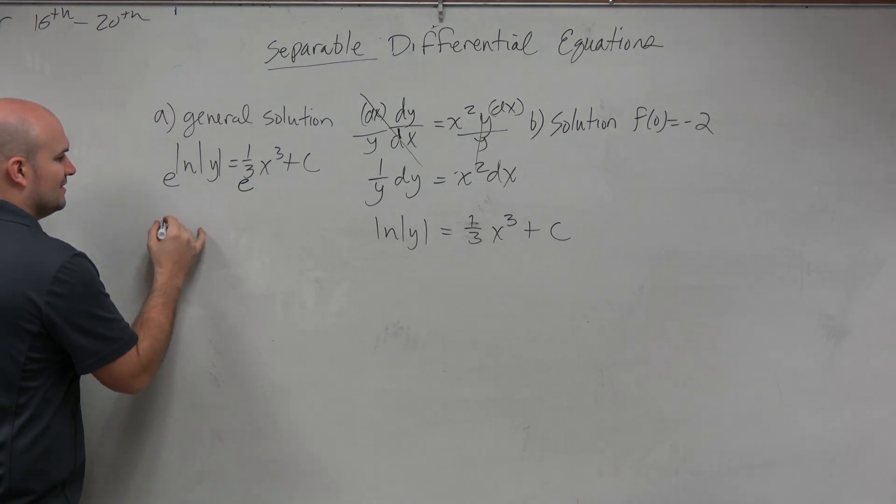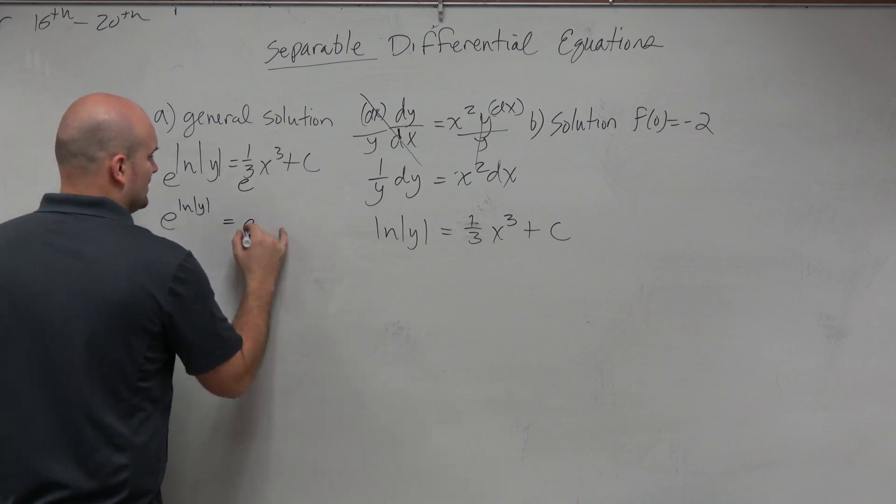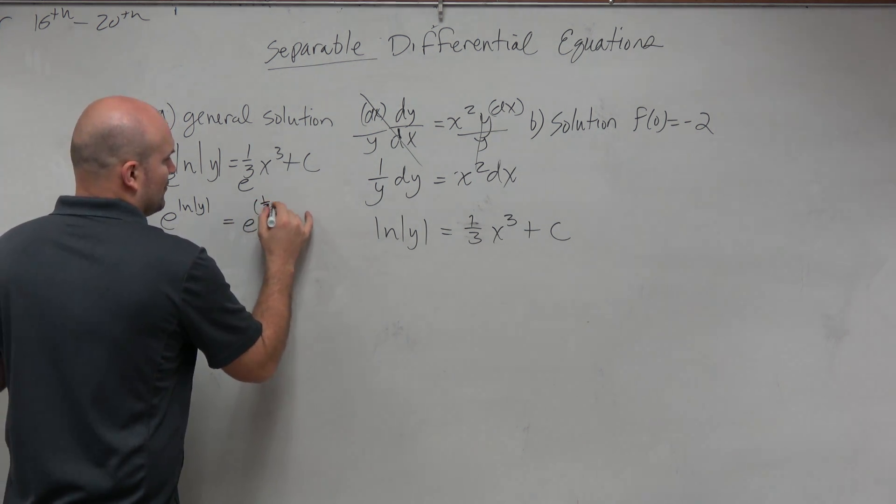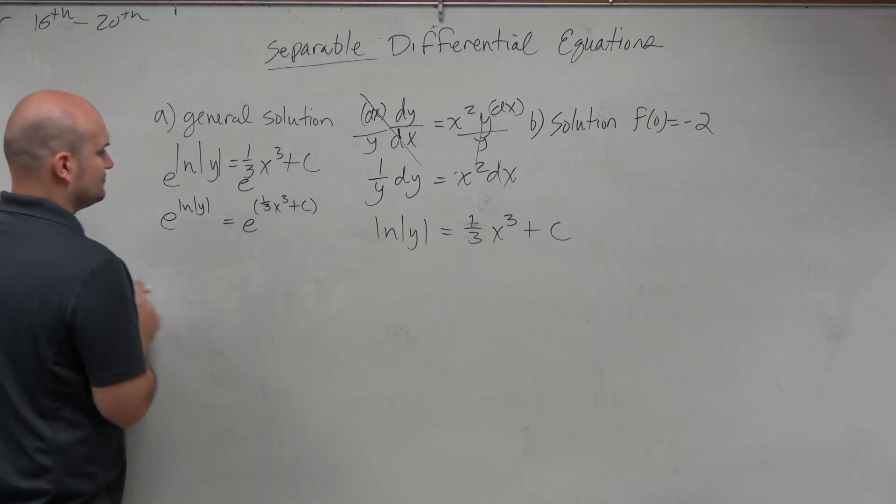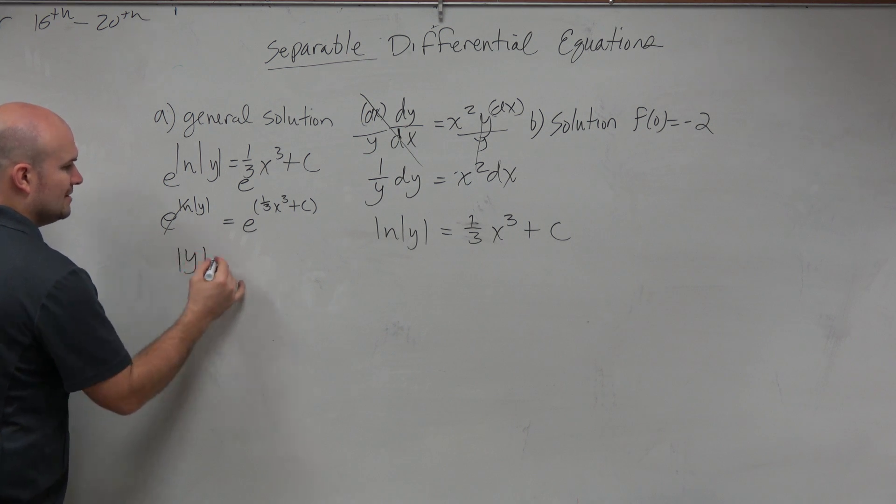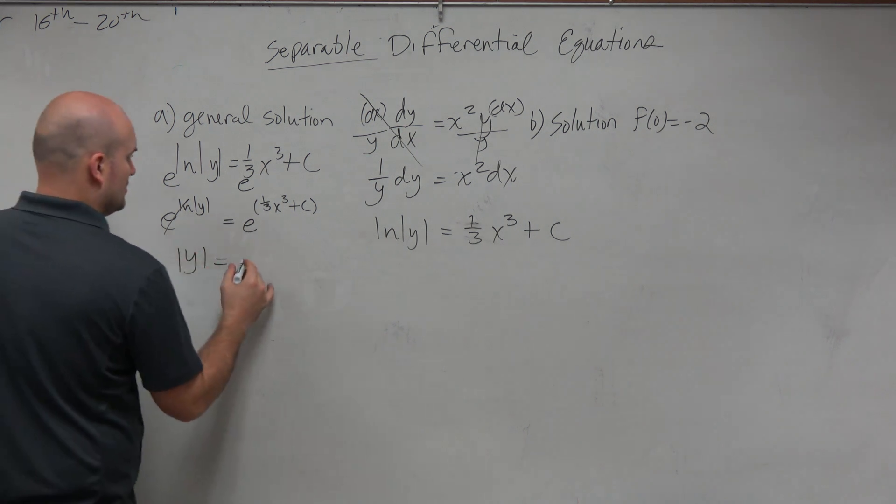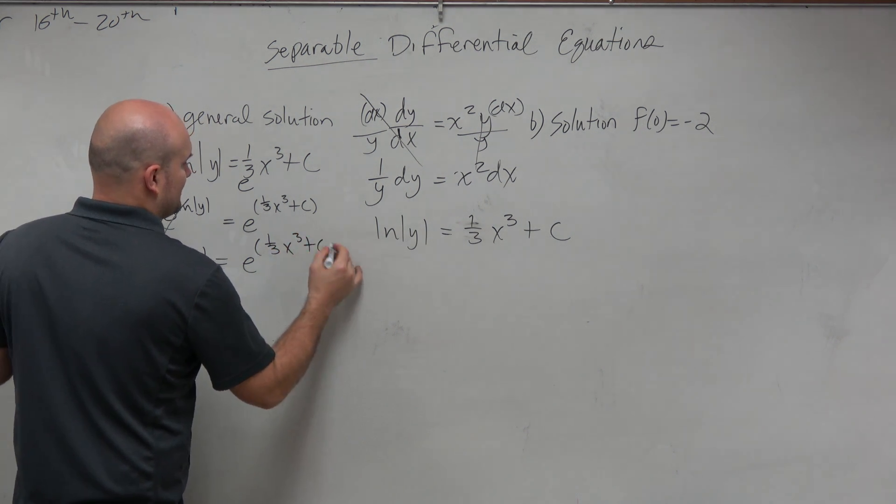So, therefore, we have e to the ln of absolute value of y equals e to the 1/3 x cubed plus c. Actually, yeah, plus c. So, therefore, this gives us absolute value of y is equal to e to the 1/3 x cubed plus c. Now, here comes the problem.